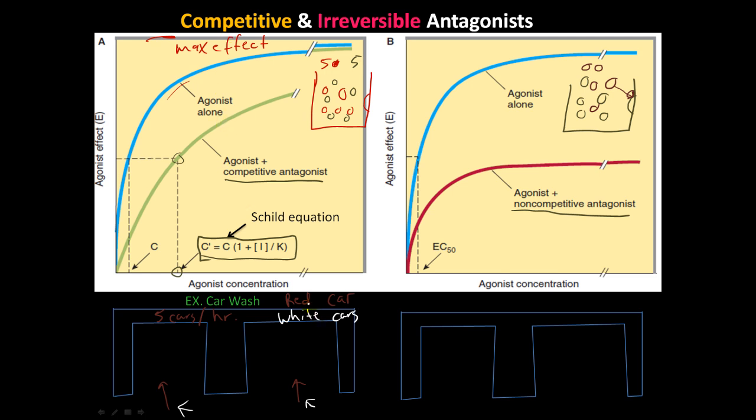The same thing over here, but let's say there's two bays for these cars to go get their car wash. Let's say this non-competitive antagonist, a big semi-truck, comes in and gets jammed in here. He completely takes out this bay. So now you only have one bay to do car washes, so your rate, or your effect, will be severely diminished.